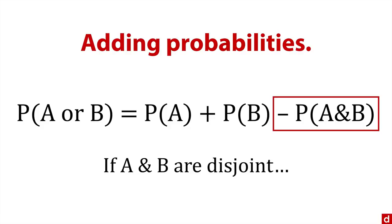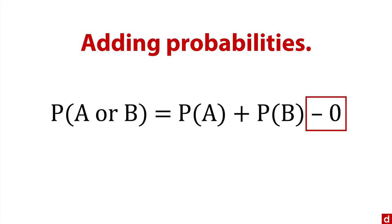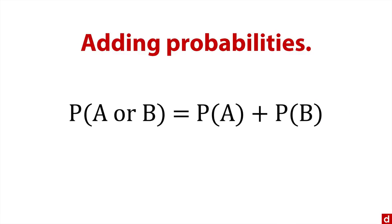because maybe there's some overlap between them. On the other hand, if A and B are disjoint, which means they never occur together, then that's equal to zero. You can subtract zero, which gets you back to the original probabilities. Let's take a really easy example of this.